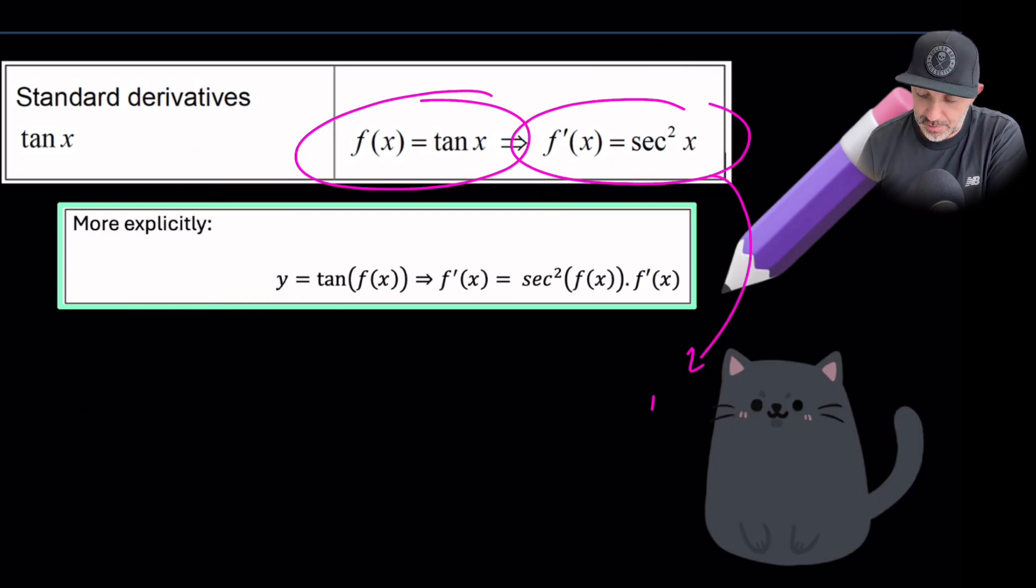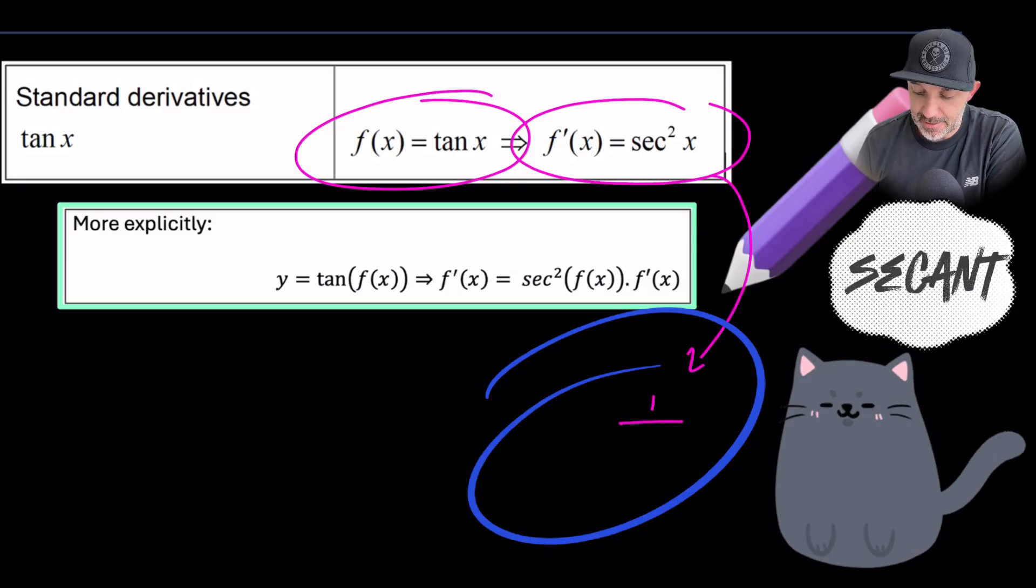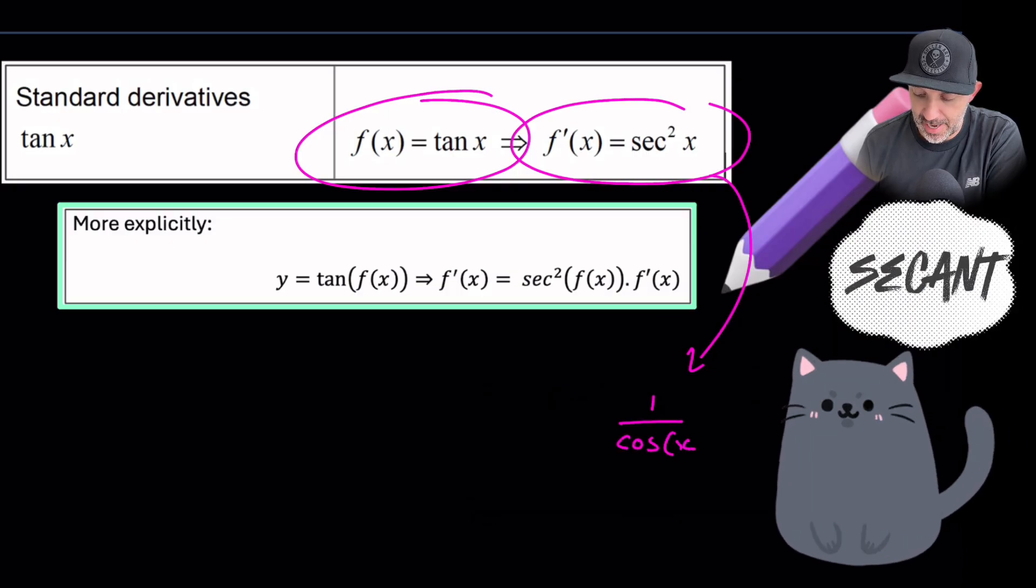So first of all, what is sec squared? Well that is secant and it stands for 1 over cos x.